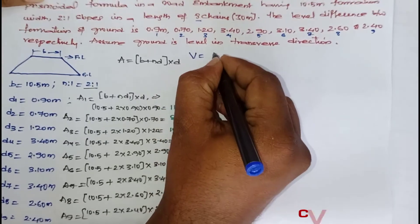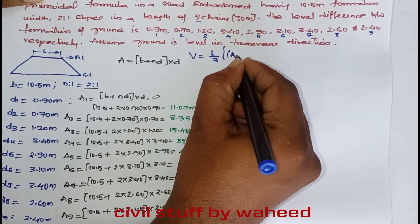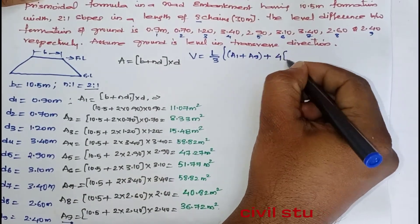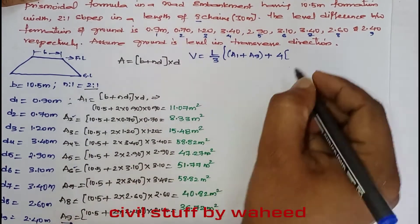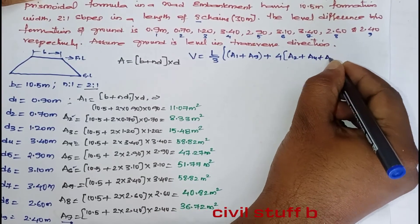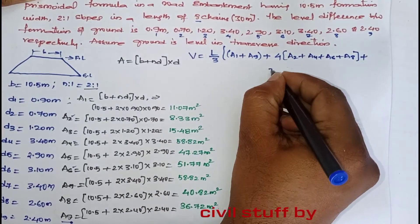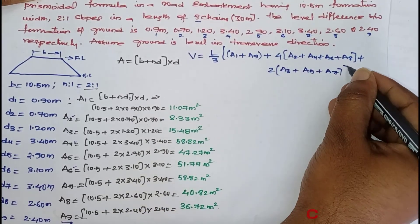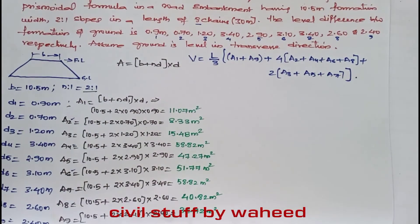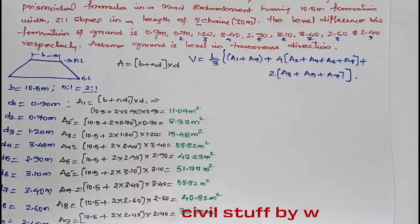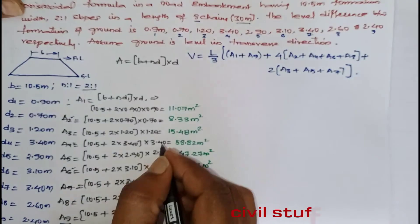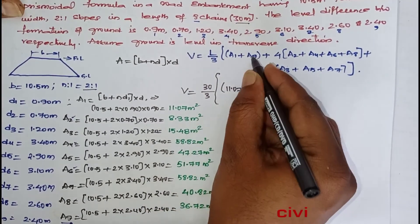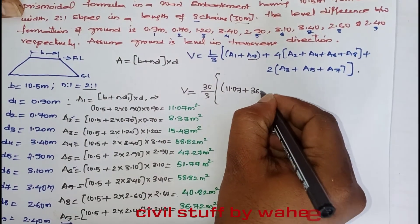The volume using the prismoidal formula is: V = (L/3) × [A_first + A_last + 4×(even areas: A2 + A4 + A6 + A8) + 2×(odd middle areas: A3 + A5 + A7)]. Here L = 30 meters, so V = (30/3) × [A1 + A9 + 4×(A2 + A4 + A6 + A8) + 2×(A3 + A5 + A7)].